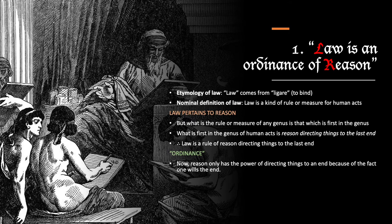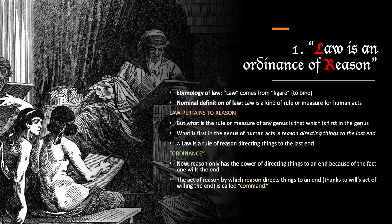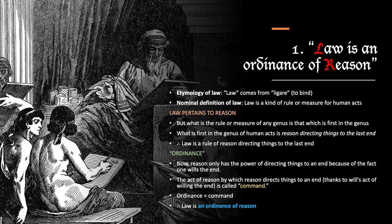Law must also be an ordinance, and that's for this reason: reason only has the power of directing things to an end because of the fact that one wills the end. The act of reason by which reason directs things to an end, thanks to the will's act of willing the end, is called command. Command and ordinance are the same thing. So we conclude that law is an ordinance of reason. We first showed that it pertains to reason because it's a rule of human acts, and now we've also shown that law is an ordinance or command of reason. Another word used interchangeably with command and ordinance is precept. Precept, command, and ordinance all mean basically the same thing.